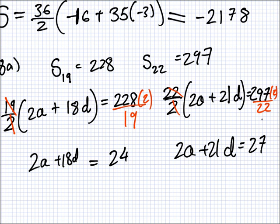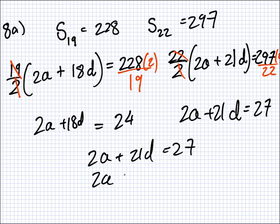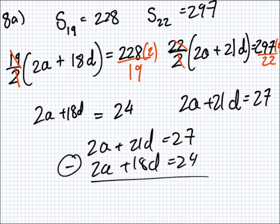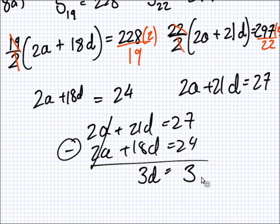This reminds you of something else we did this afternoon. What type of problem do we have now? What's that called? Simultaneous. So, we have 2A plus 21D equals 27, and 2A plus 18D equals 24. And I minus, 2A minus 2A, it's gone. 21D minus 18D? 3D. 27 minus 24? 3. So, what's D? 1. And, how do I get A? Sum it in.